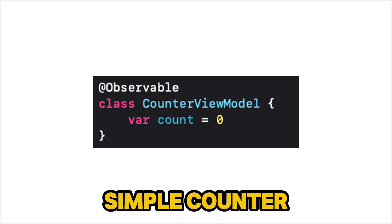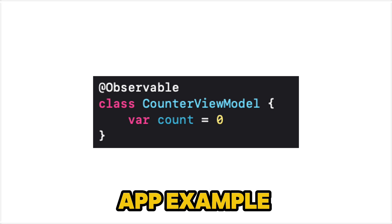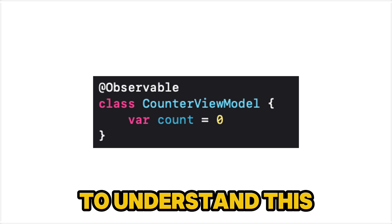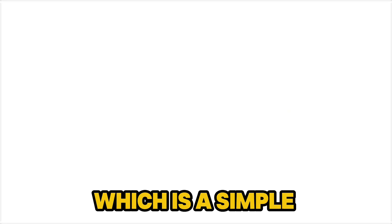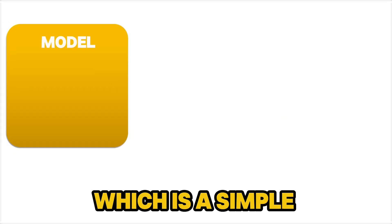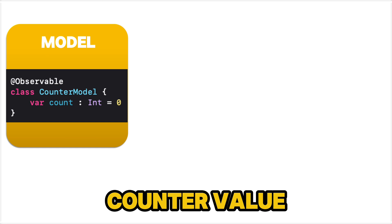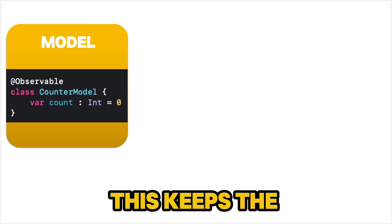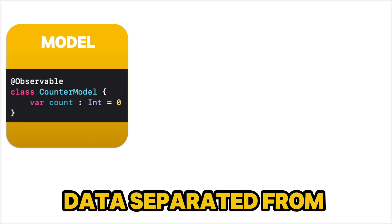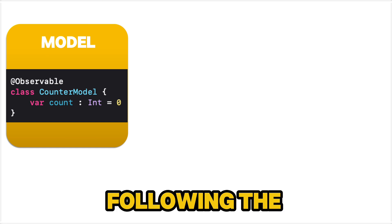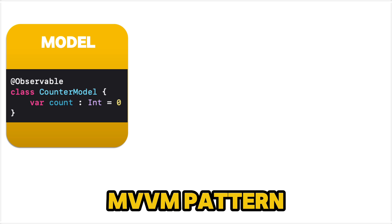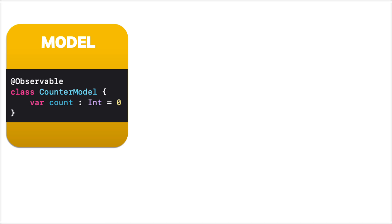Let's take a simple counter app example to understand this. First we have the model, which is a simple struct that holds our counter value. This keeps the data separated from our logic and UI, following the MVVM pattern.